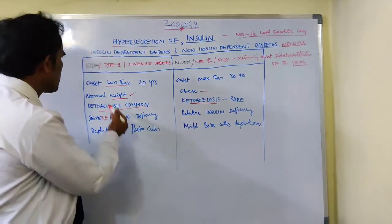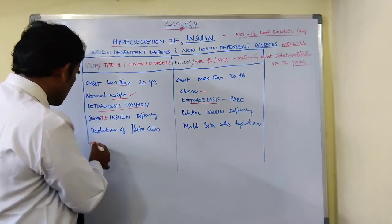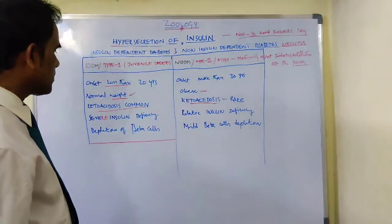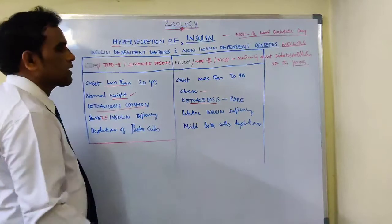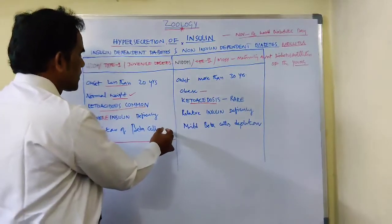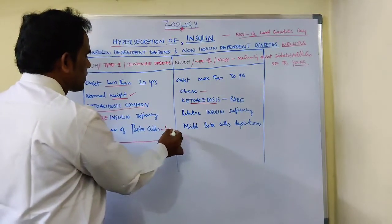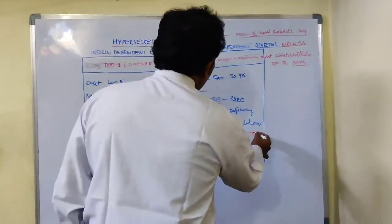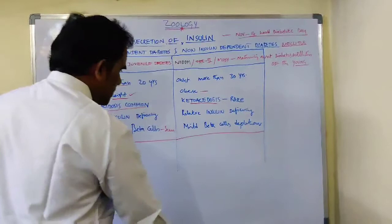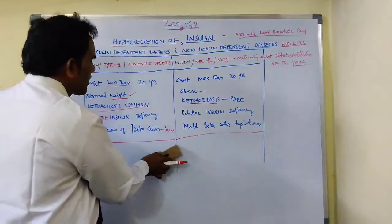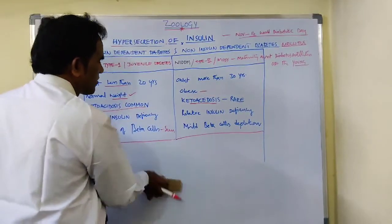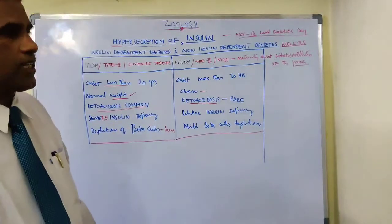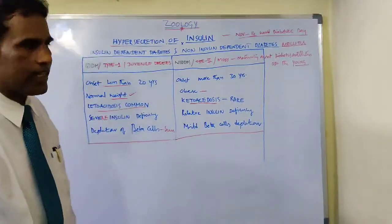In insulin-dependent diabetes mellitus, there is severe insulin deficiency with significant depletion of beta cells. But in non-insulin-dependent diabetes mellitus, there is relatively mild insulin deficiency, and only mild beta cell depletion is seen.